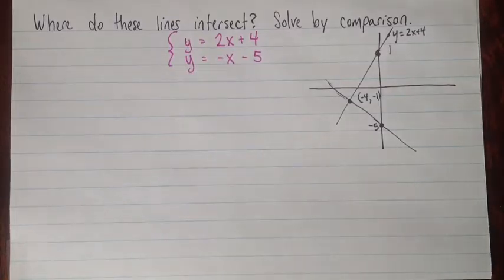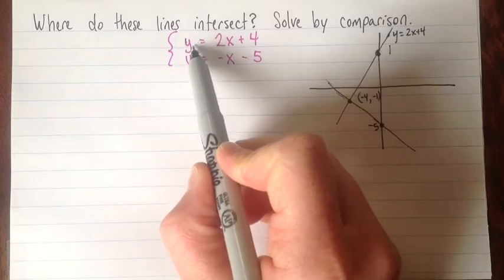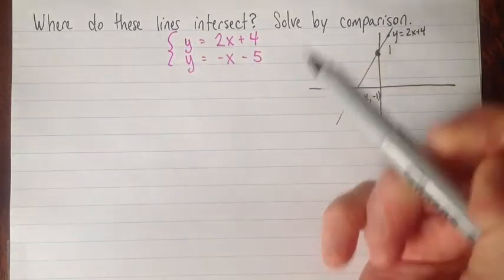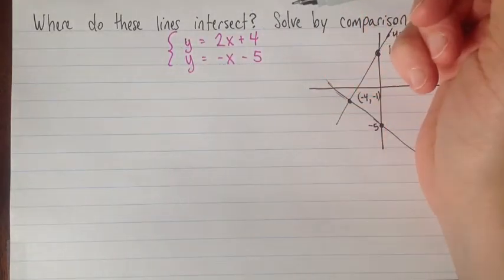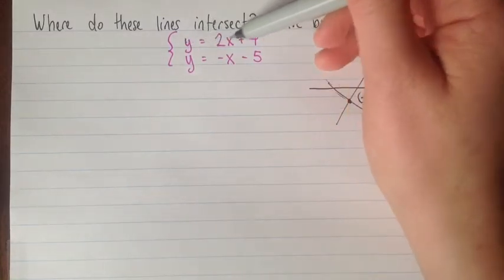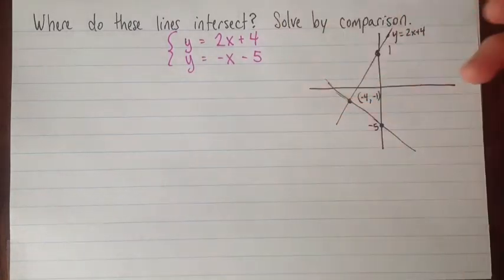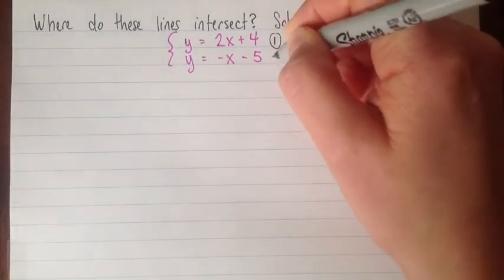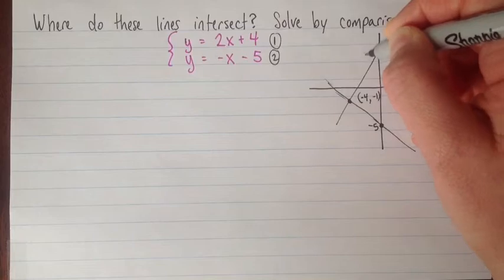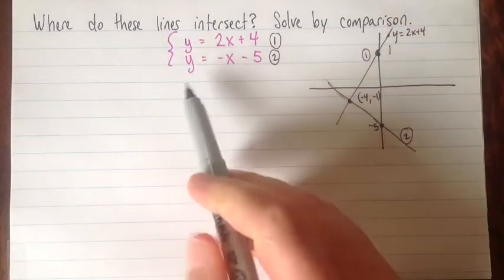So the comparison method, you can use if you've got two linear equations and if they both have one of the variables isolated as the same one. The most common time that we'll use this is if we have two linear equations that are both in the y equals form. Often y equals mx plus b. Maybe I'll just give these names. We'll call that one number 1 and that one number 2.